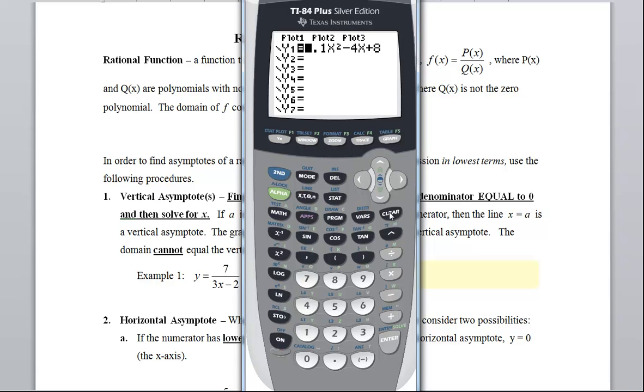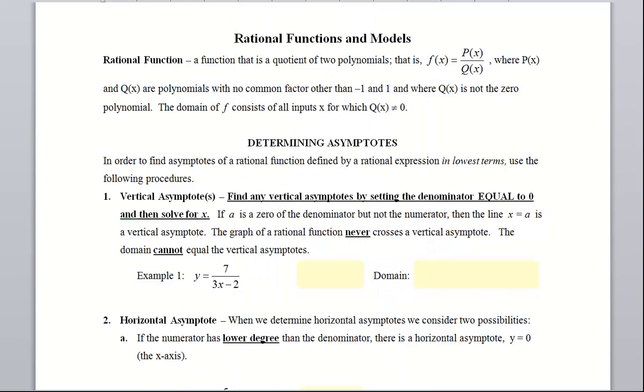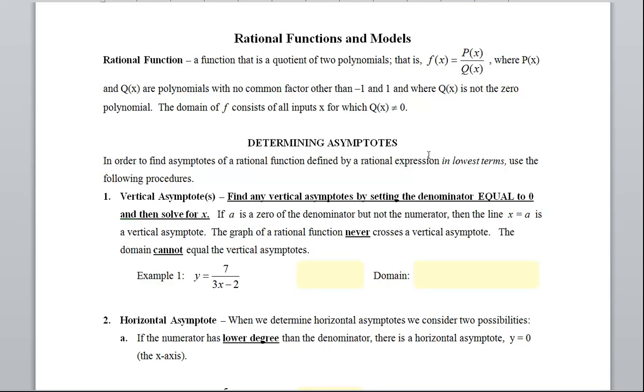So let me clear that parabola out, and now we'll look at rational functions and models. It's a different type of function that we haven't seen before. A rational function is a quotient of two polynomials. I've got a polynomial P(x) in the numerator and Q(x) in the denominator, no common factor other than negative one and one, and Q(x) is not the zero polynomial. I cannot have division by zero.